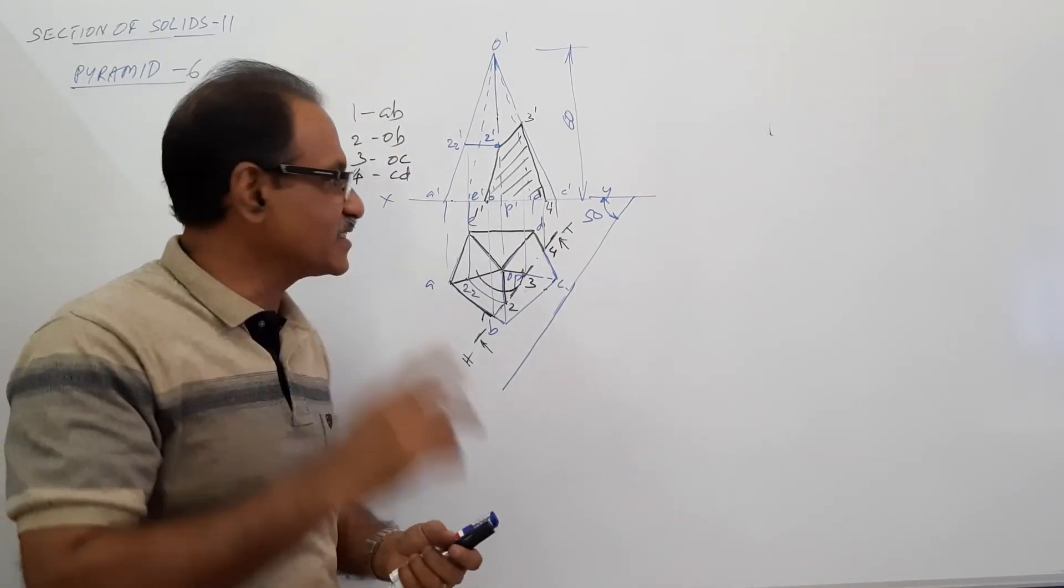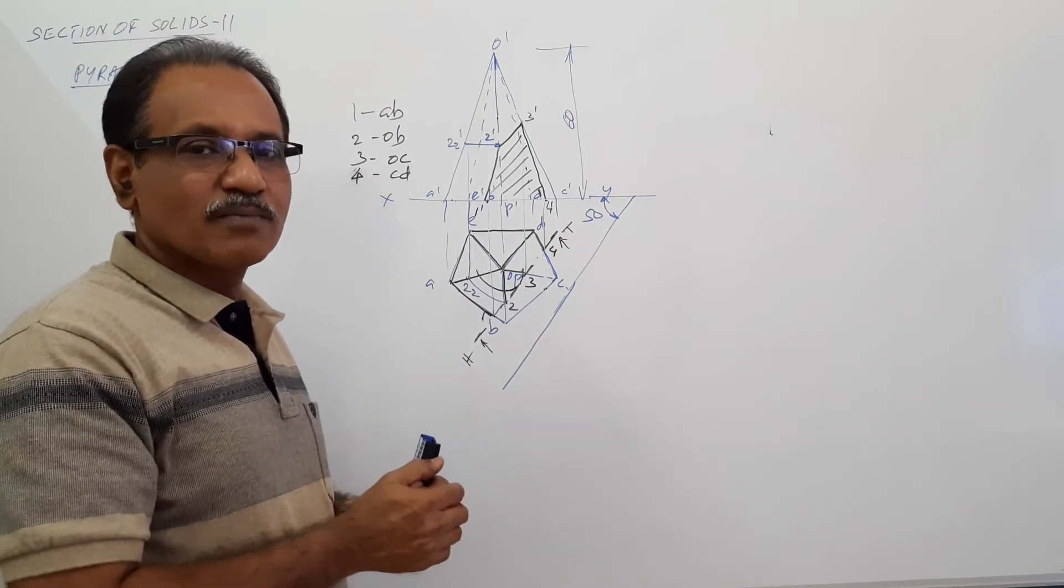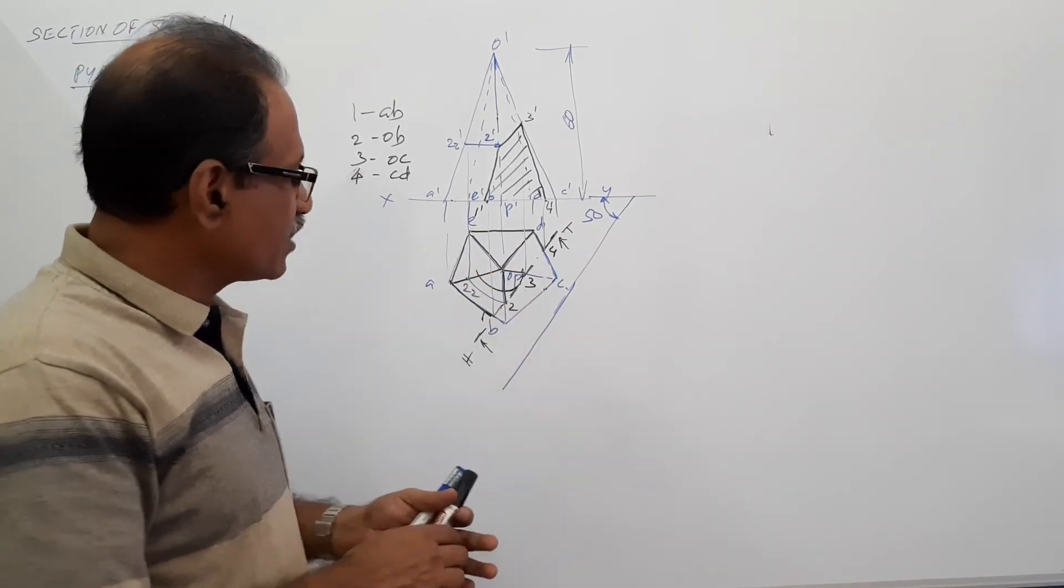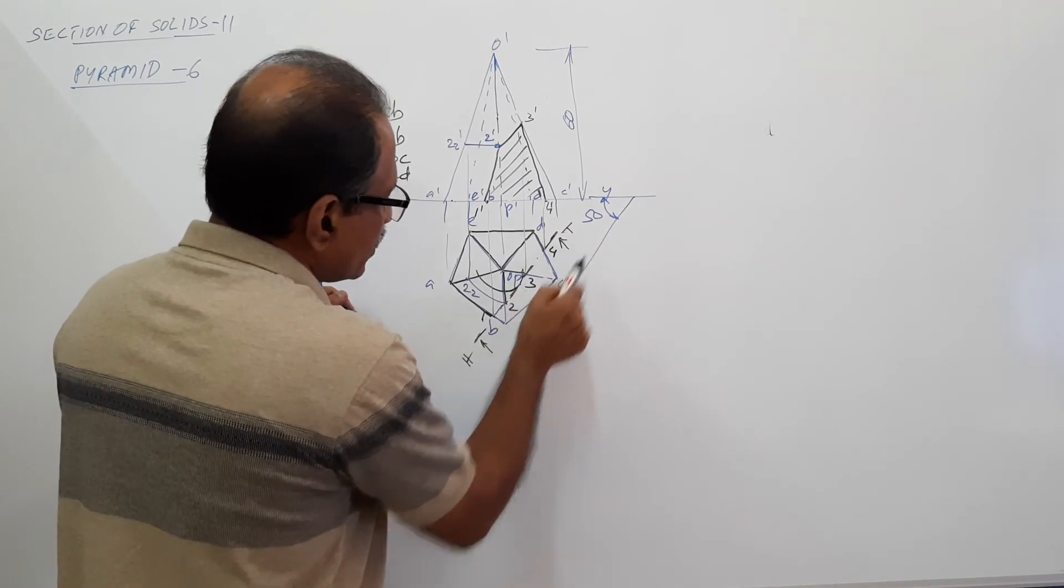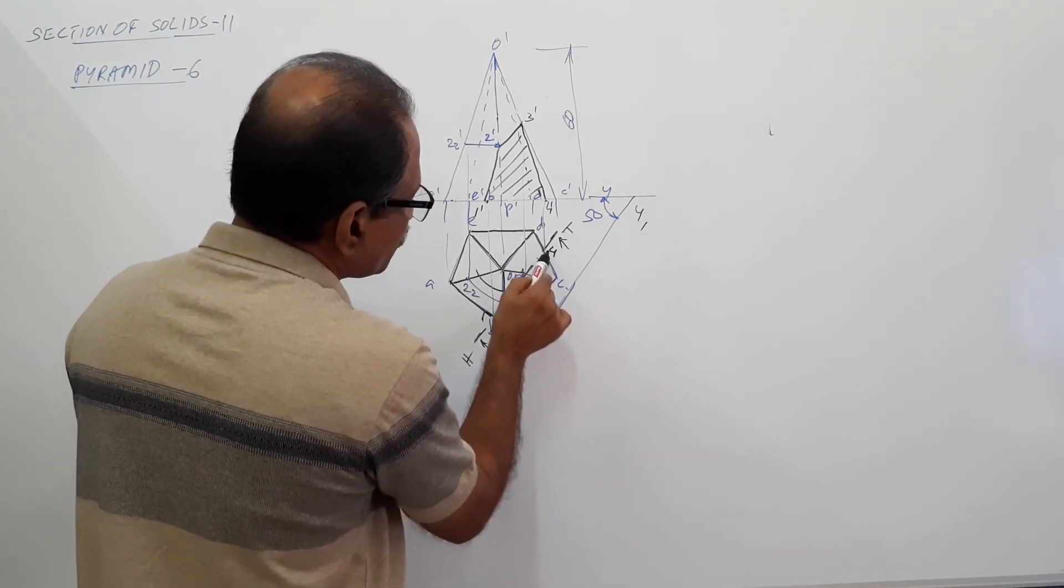Sectional elevation, there are 4 sides, but it is not of any regular shape. When you draw the true shape, perpendicular to X1Y1, you have to draw project this.